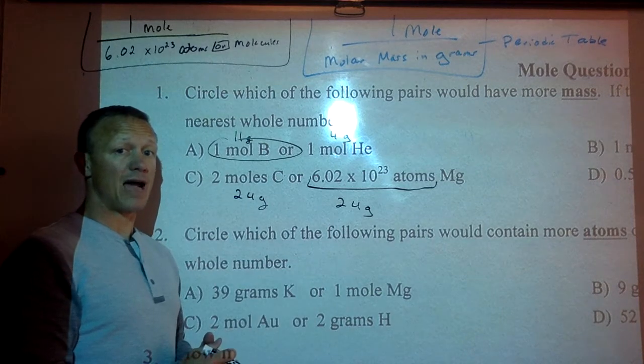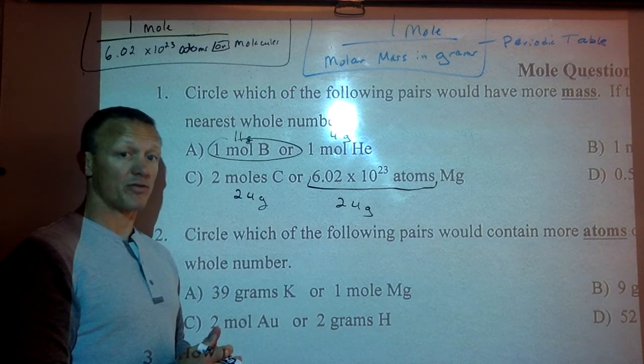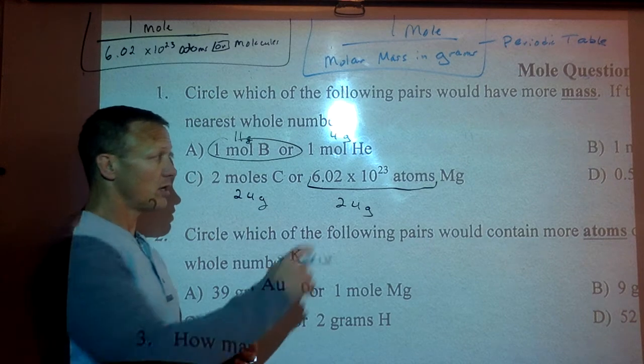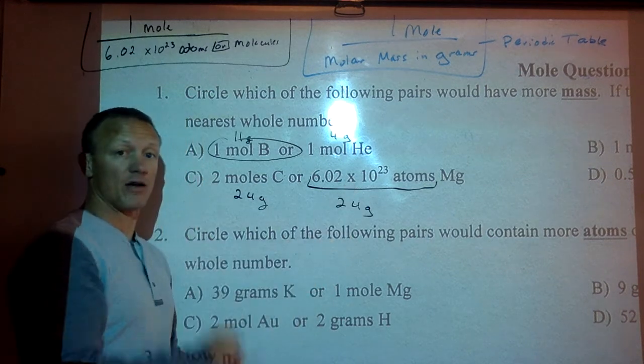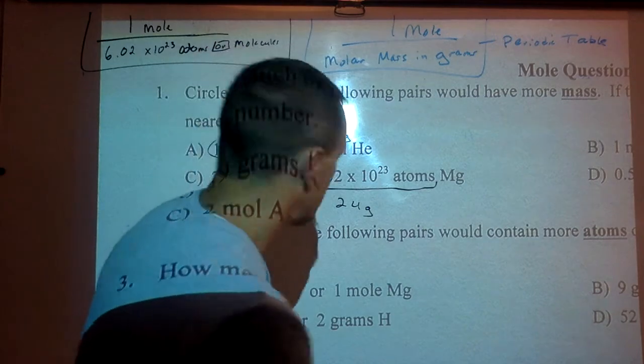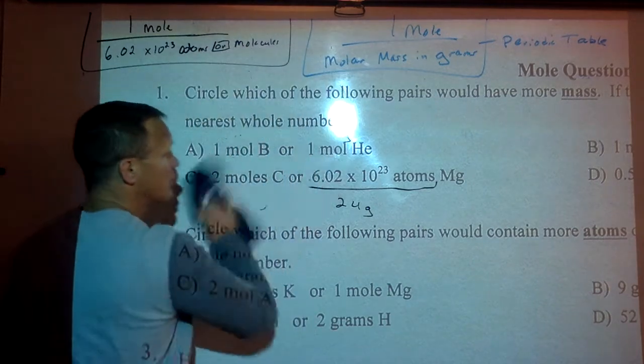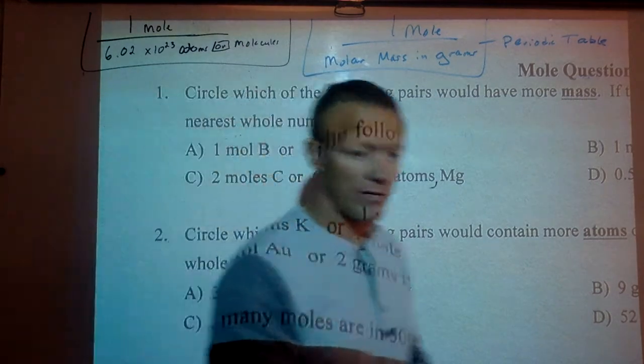They're not equal in terms of number of atoms, but they're equal in terms of mass, because magnesium atoms are about twice the size of carbon atoms, twice as massive as those. So that's one of the things we're going to do. Here's a couple of conversions.